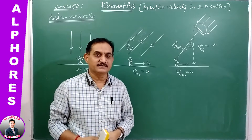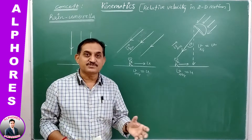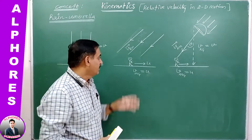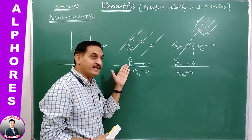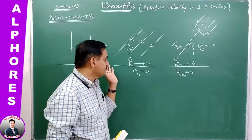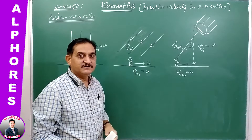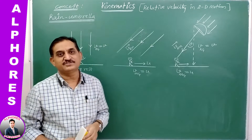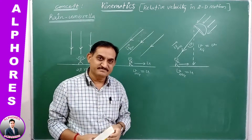The basic definition of relative velocity: velocity of one body with reference to another moving body. Rain is one body and man is another body. The man is moving — taking a run on the horizontal surface — so he finds the velocity of rain appearing to fall at a certain inclination. That is the relative velocity. Therefore this concept belongs to relative velocity.